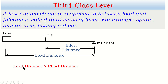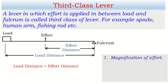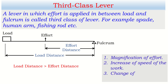From the diagram it is clear that load distance is longer than effort distance, because the distance from the fulcrum to the load is greater than from the fulcrum to the effort. There are three major advantages of a simple machine: magnification of effort, increase of speed, and change of direction of force.